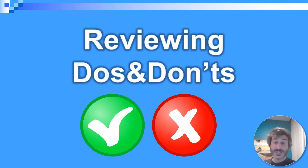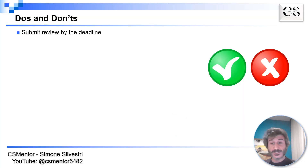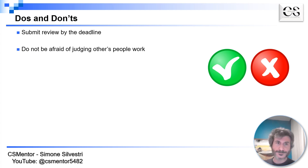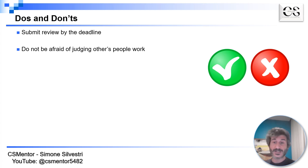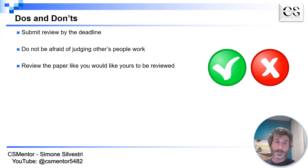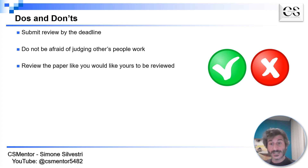Let's discuss some do's and don'ts in reviewing a paper. First, you need to submit your reviews on time, by the deadline, so that the TPC chairs can decide which papers should be accepted and which should be rejected. Don't be afraid of judging other people's work — our job as reviewers is to provide an honest assessment of the contribution of the paper. Review the paper like you would like yours to be reviewed: provide a complete, constructive, and honest assessment. Do not be too mean, do not be too brief, and make sure you read the paper and provide constructive comments to improve it.